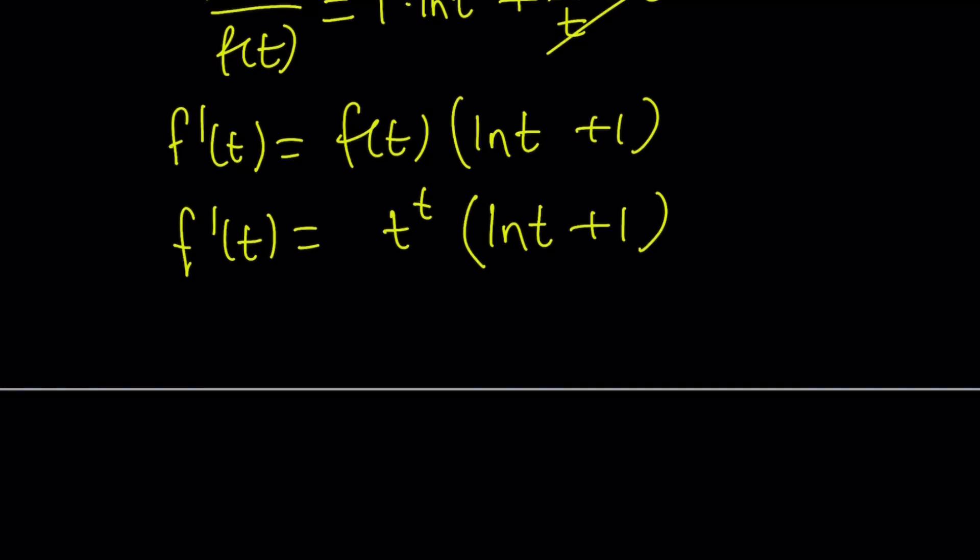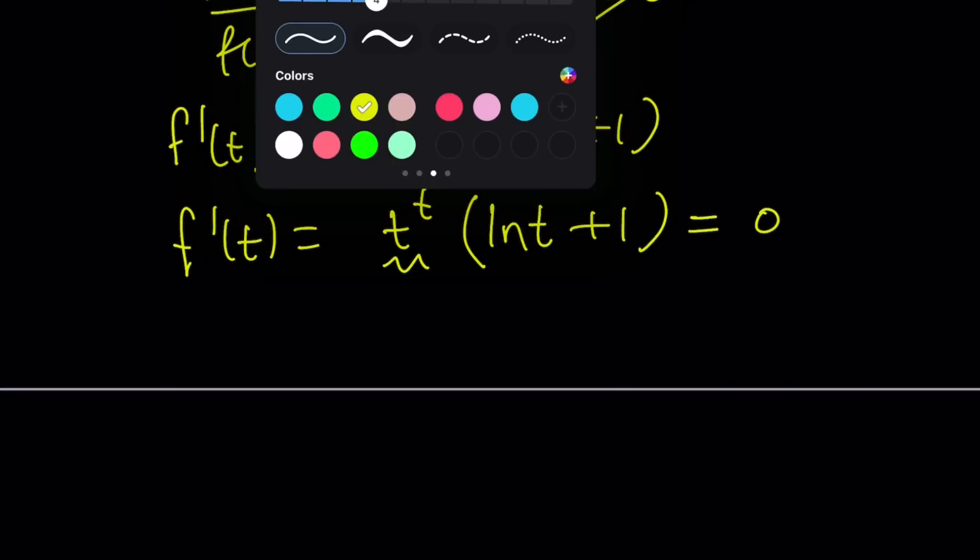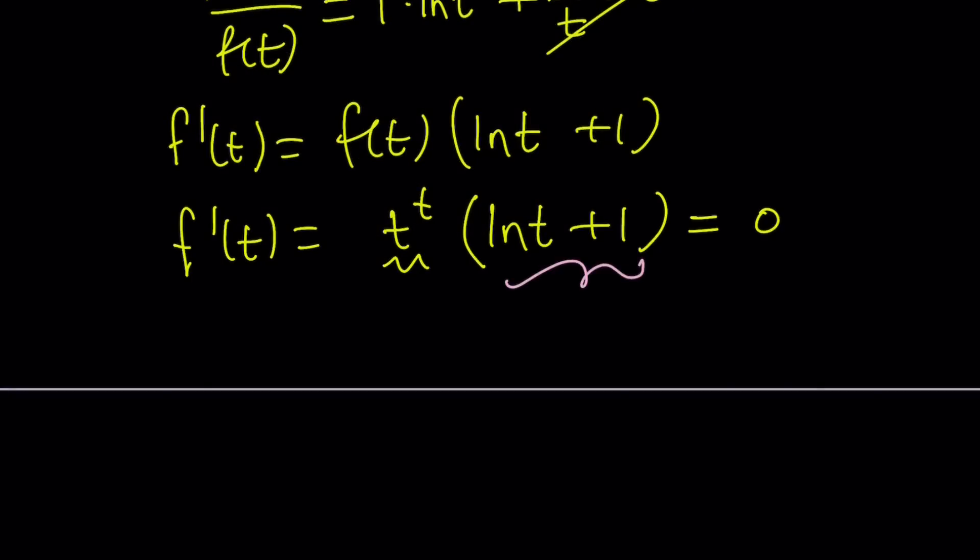So now this is the derivative. What am I going to do with this? I'm going to set this equal to 0. t to the t for real t cannot equal 0. So we want ln t plus 1 to be 0. So if ln t plus 1 is equal to 0, this implies ln t is equal to negative 1, which implies t is equal to e to the power of negative 1. Remember the base is e for natural log. Then t can be written as e to the power of negative 1, or t can be written as 1 over e.